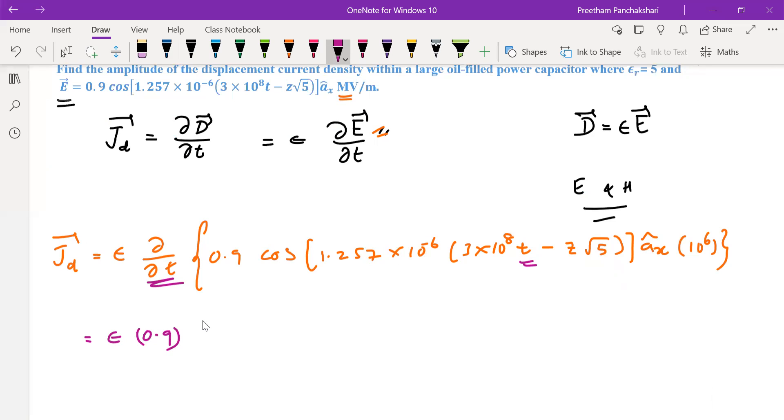Differentiation of cos is minus sin: 1.257×10⁻⁶(3×10⁸t - z√5). So this much is there. So we have to differentiate the argument now. First we differentiated cos, it becomes minus sign.